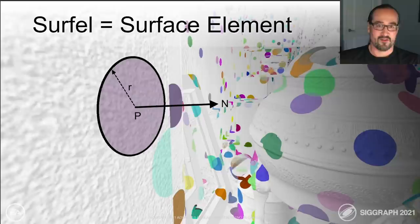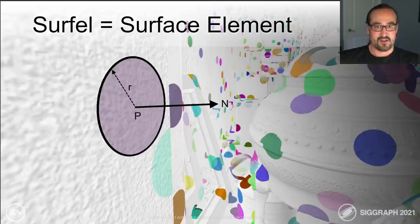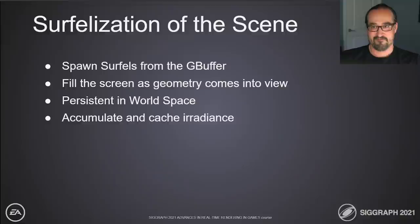In the same way an image can be discretized by dividing it into pixels, we can also discretize a geometric surface. One way of doing that is by using surfels — short for surface elements. A surfel is defined by a position, a radius, and a normal, and approximates a small neighborhood on a surface near the given position.